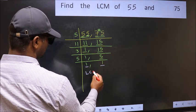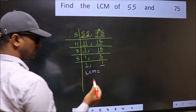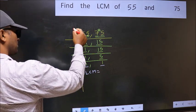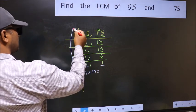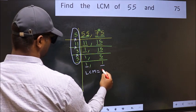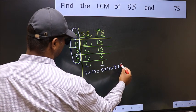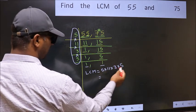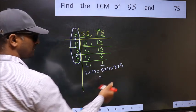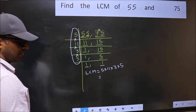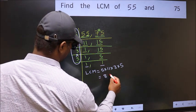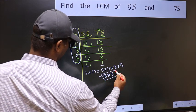So our LCM is the product of these numbers. That is 5 into 11 into 3 into 5. When we multiply these numbers, we get 825 as our LCM.